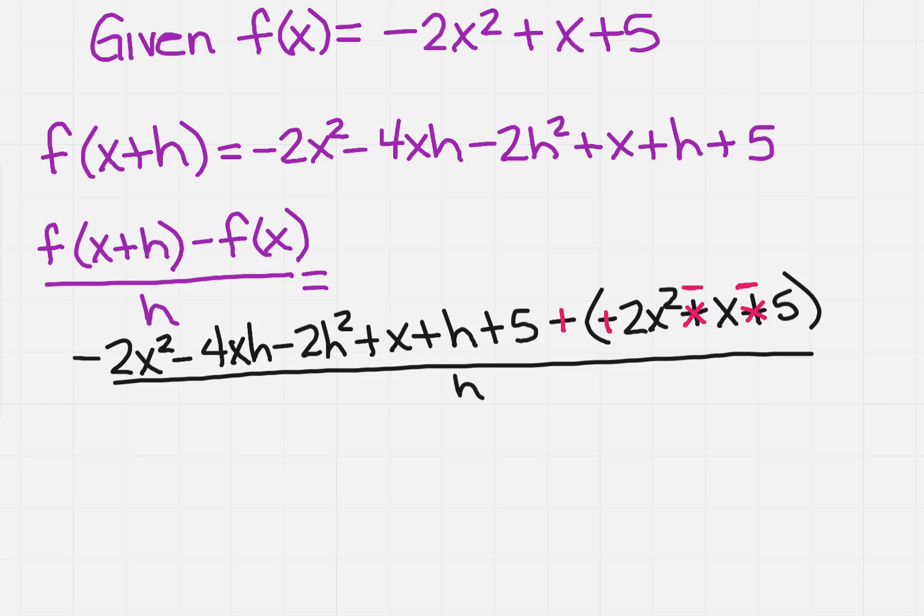So now I want to combine like terms. So when I'm doing this, I notice that there's a minus 2x squared and there's a plus 2x squared, so this cancels with this. I've got a plus x, I've got a plus x, and a minus x. I've got a plus 5 and a minus 5.